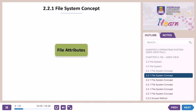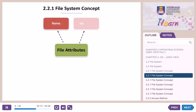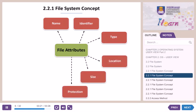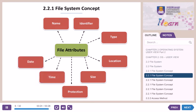File attributes vary from one operating system to another. The common file attributes are: name, identifier, type, location, size, protection, time, date, and user identification.